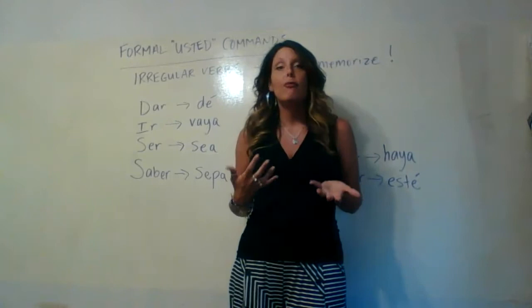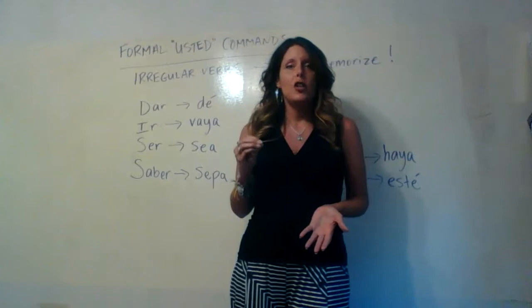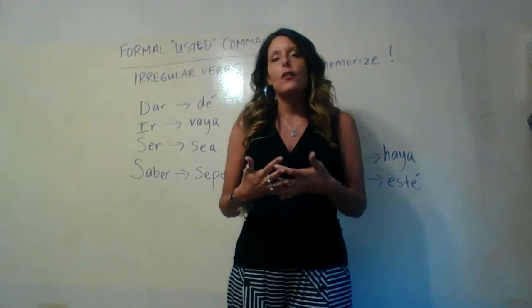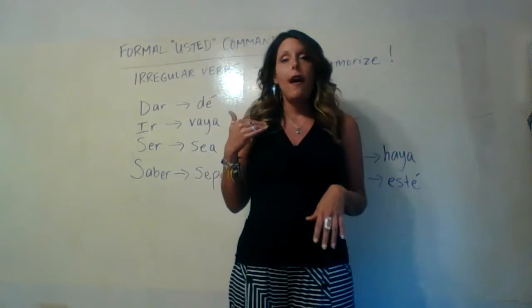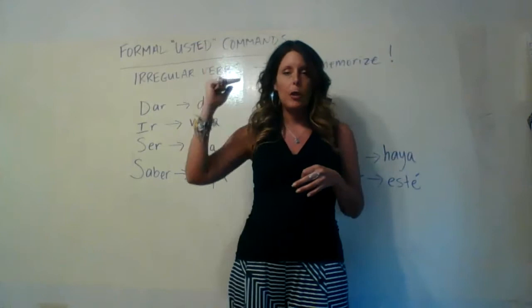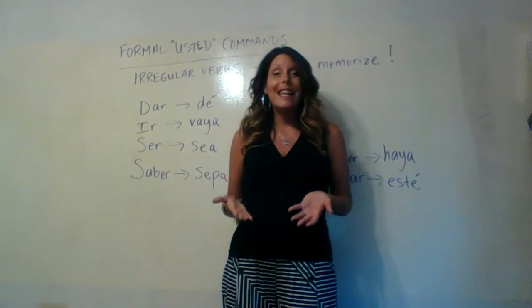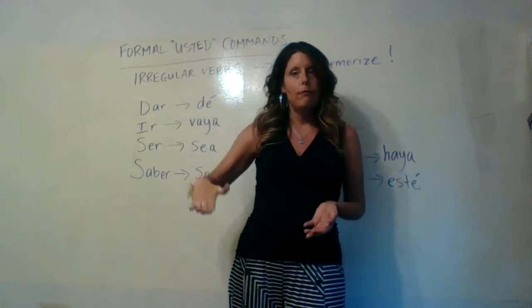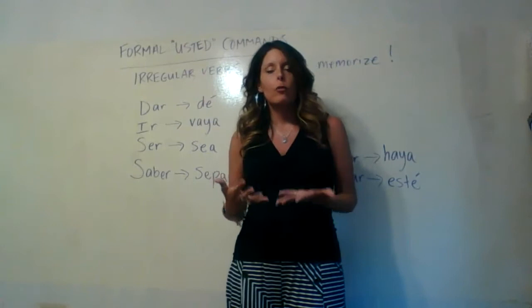The definition of irregular verbs with formal usted commands are literally the ones with which you cannot start off with the yo conjugation of the present tense and go from there. With everything else — car-gar-zar, stem change, spell change — we have three steps: start with the yo box of the present tense, drop the o, and add opposite endings. None of those are considered irregular.